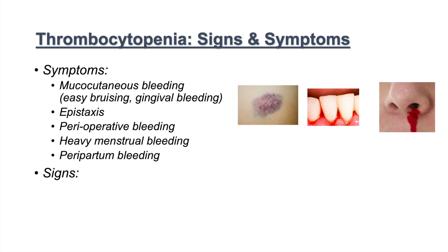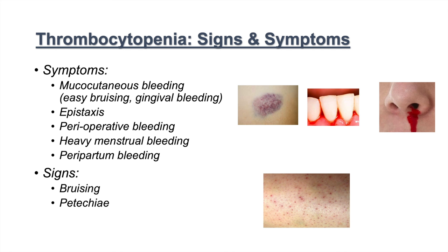The signs of thrombocytopenia are mostly dermatological. We see bruising, and we also see petechiae, which are small red dots on the skin. Purpura and ecchymosis are also signs — petechiae, purpura, and ecchymosis are essentially the same thing but differ in size.